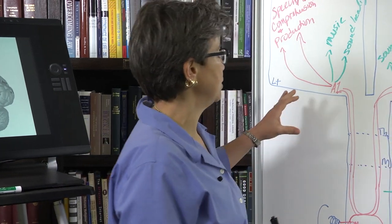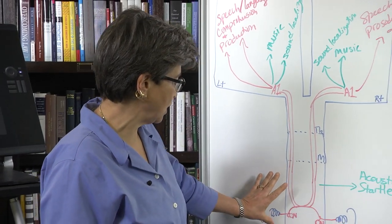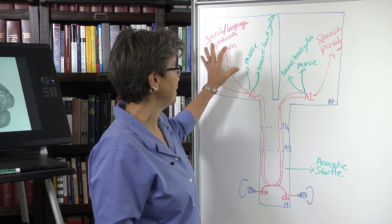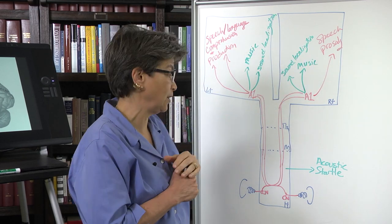So this is a schematic where I've put the hindbrain, the midbrain, the thalamus, and then the two hemispheres, the left hemisphere and the right telencephalic hemisphere.